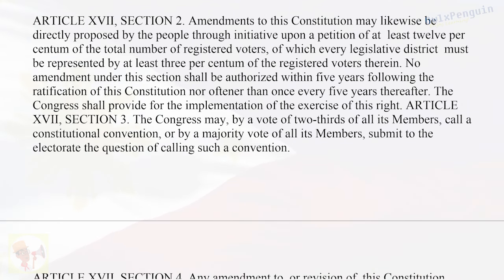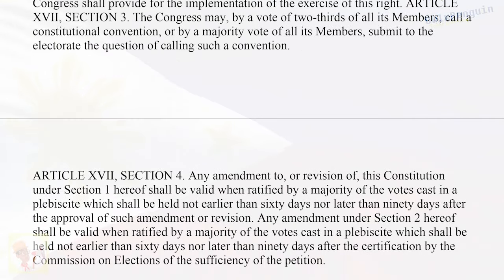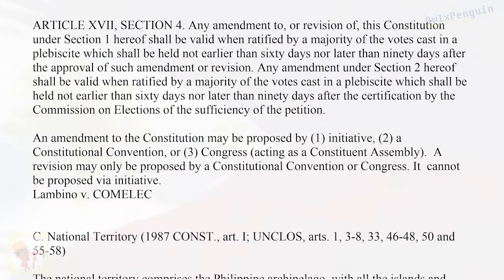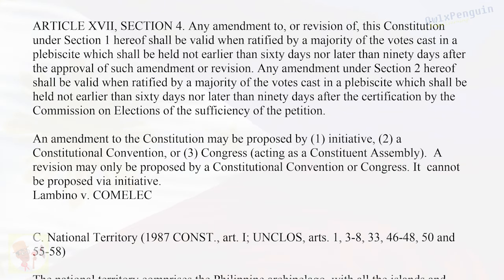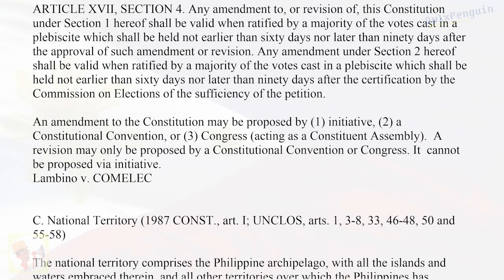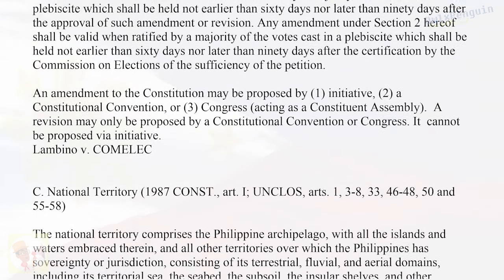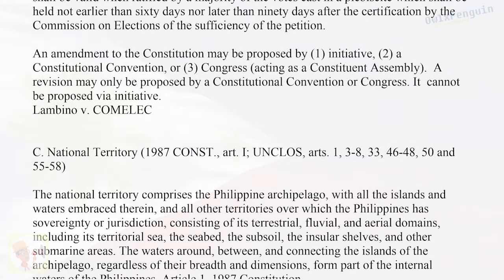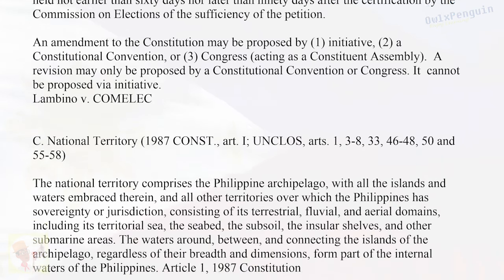Article 17, Section 3: The Congress may, by a vote of two-thirds of all its members, call a Constitutional Convention, or by a majority vote of all its members submit to the electorate the question of calling such a convention. Article 17, Section 4: Any amendment or revision under Section 1 shall be valid when ratified by a majority of the votes cast in a plebiscite held not earlier than 60 days nor later than 90 days after approval. Any amendment under Section 2 shall be valid when ratified by a majority of votes cast in a plebiscite held not earlier than 60 days nor later than 90 days after the certification by COMELEC of the sufficiency of the petition. An amendment may be proposed by initiative, a Constitutional Convention, or Congress acting as a Constituent Assembly. A revision may only be proposed by a Constitutional Convention or Congress — it cannot be proposed via initiative. (Lambino v. COMELEC)